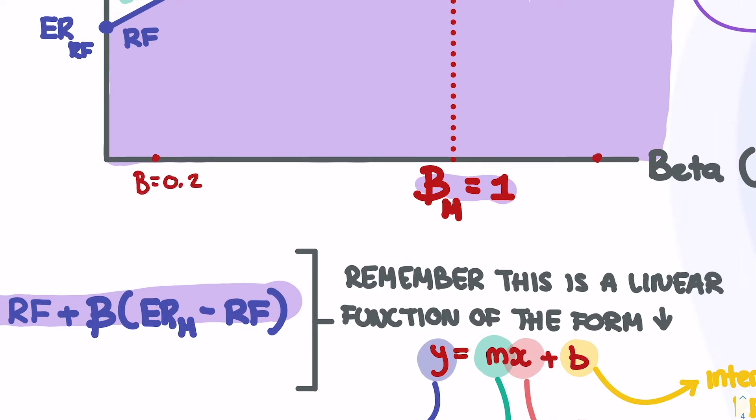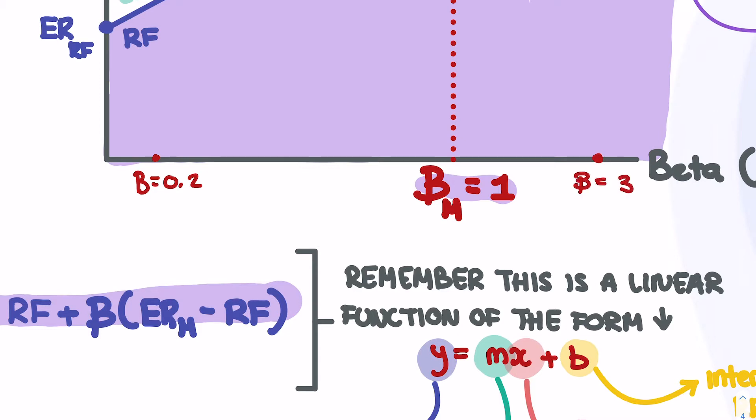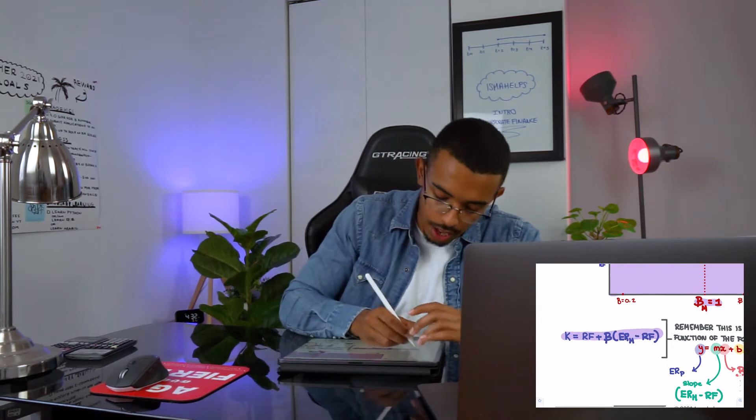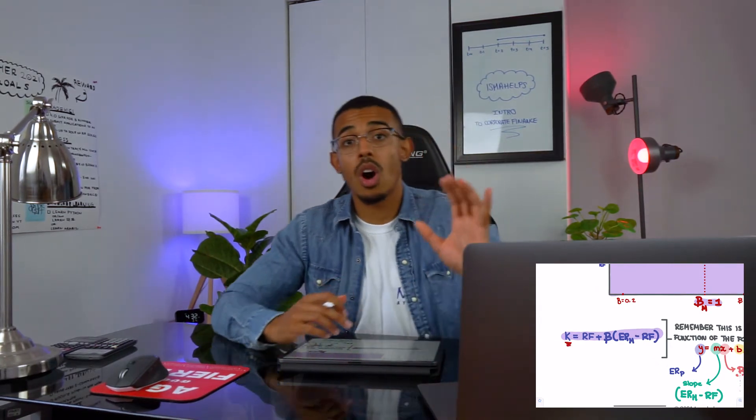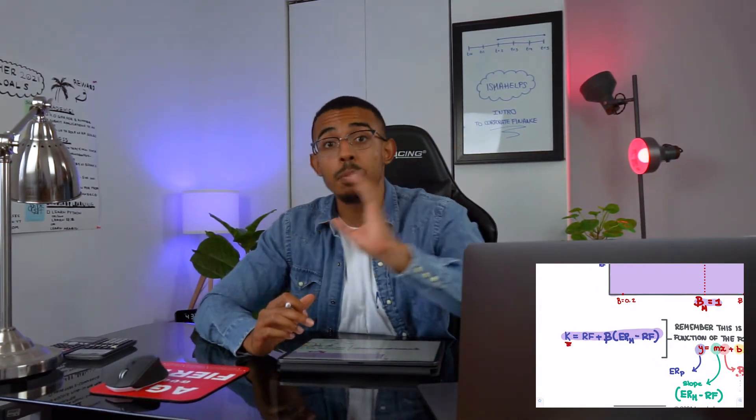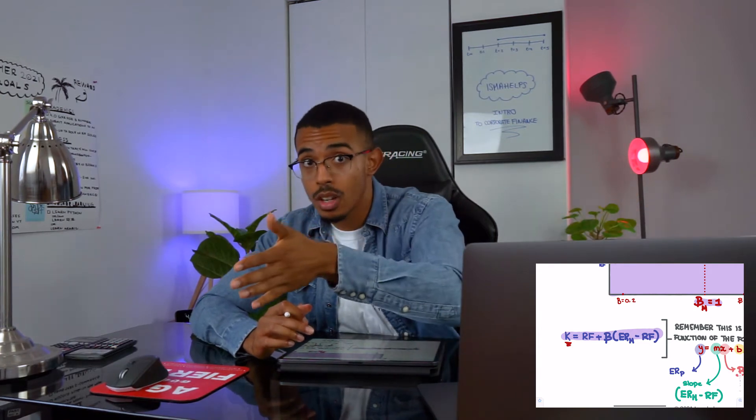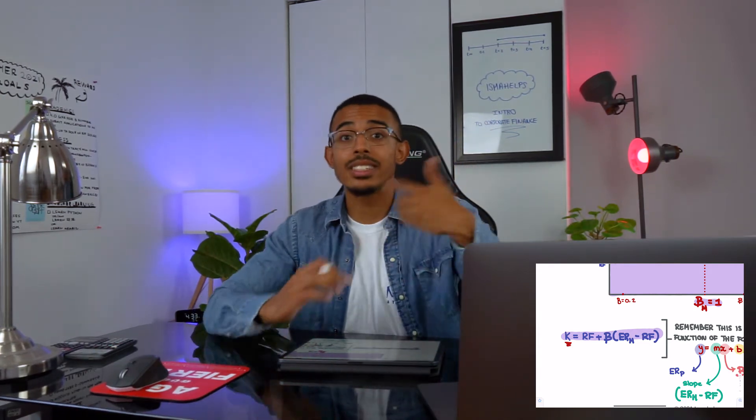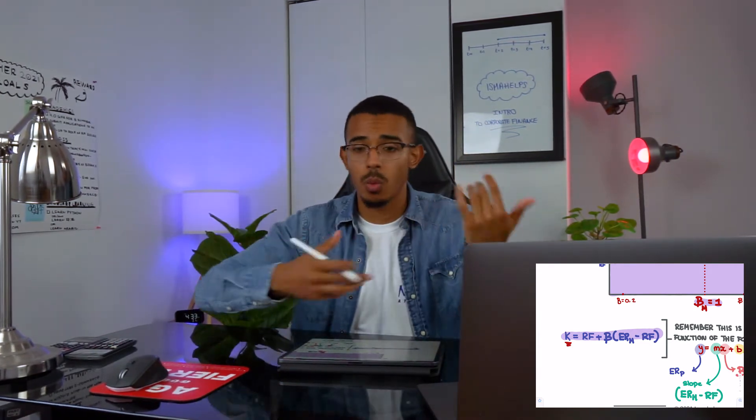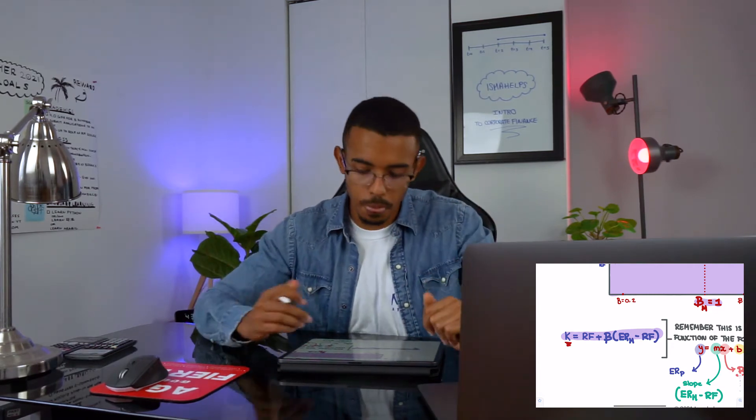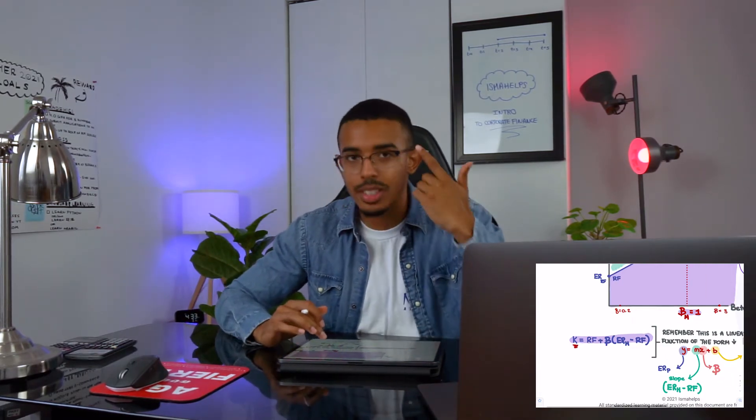but we could also take beta is equal to 3. All these different points will provide to you a different K, right? So based on our independent variable being beta on our horizontal axis, we will be able to get a different K, which is exactly what our return will be.